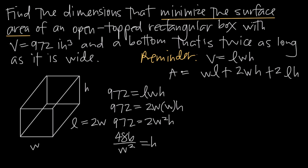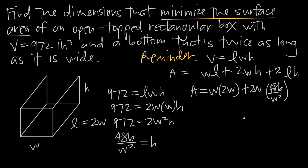Going back to the surface area formula, we substitute L = 2W and H = 486/W² to get everything in terms of W. The surface area becomes: A = W(2W) + 2W(486/W²) + 2(2W)(486/W²). Now the formula is entirely in terms of the single variable W.